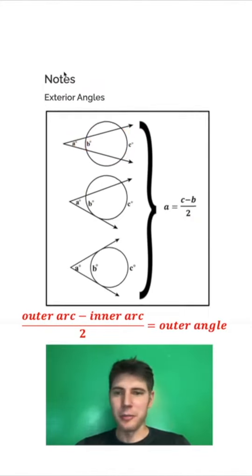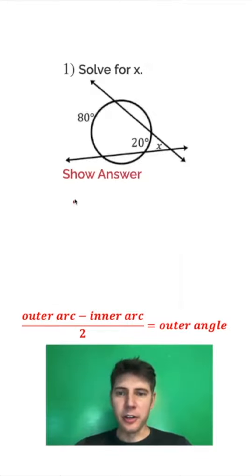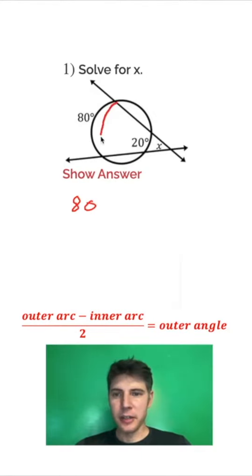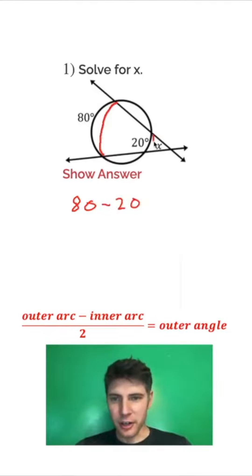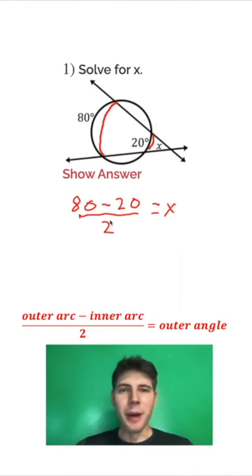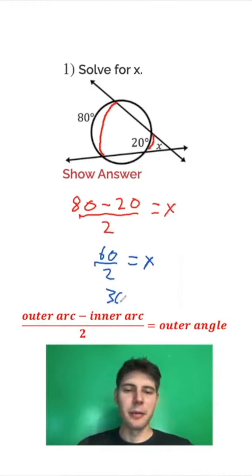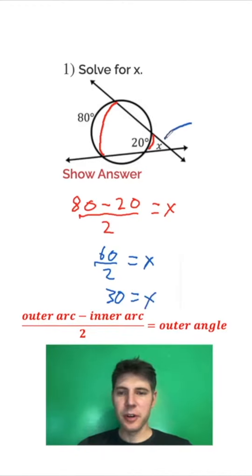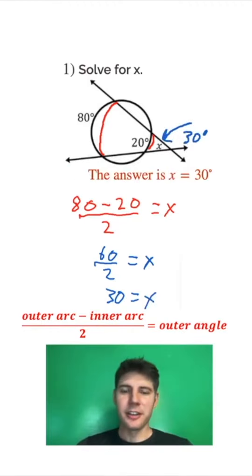So just remember: outer arc minus inner arc divided by 2 equals the outside angle. Going back to our problem: outer arc is 80, minus the inner arc 20, divided by 2 equals x. Then 80 minus 20 is 60, and 60 divided by 2 is 30. So this right here is 30 degrees — we can check the answer, and there it is: 30 degrees.